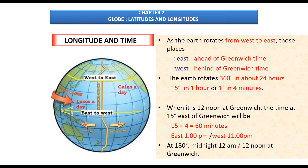Now, an important concept — longitude and time. Time is measured by the movement of the earth, moon, and planets. When the prime meridian at Greenwich has the sun at its highest point, all places along that meridian share that time. The earth rotates from west to east, so places east of the prime meridian are ahead of Greenwich time and those to the west are behind it. The earth rotates 360 degrees in 24 hours, meaning 15 degrees per hour, or 1 degree every 4 minutes.